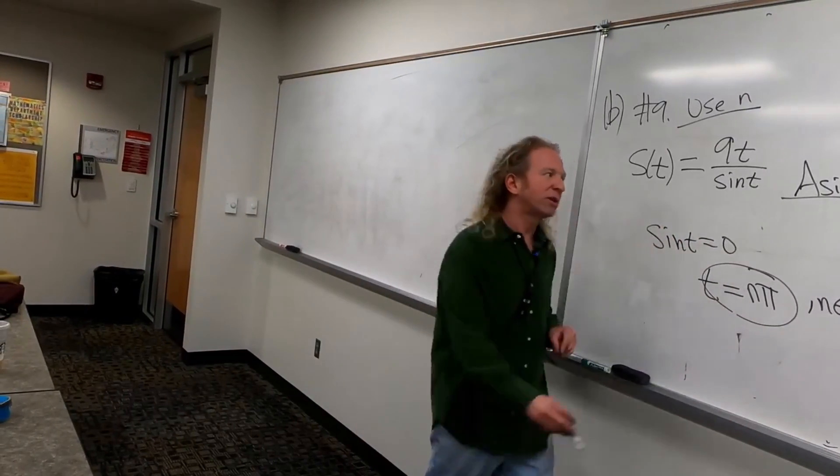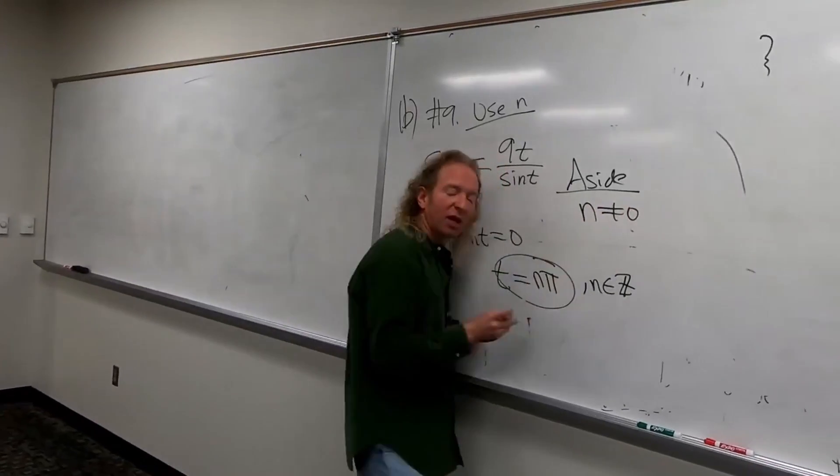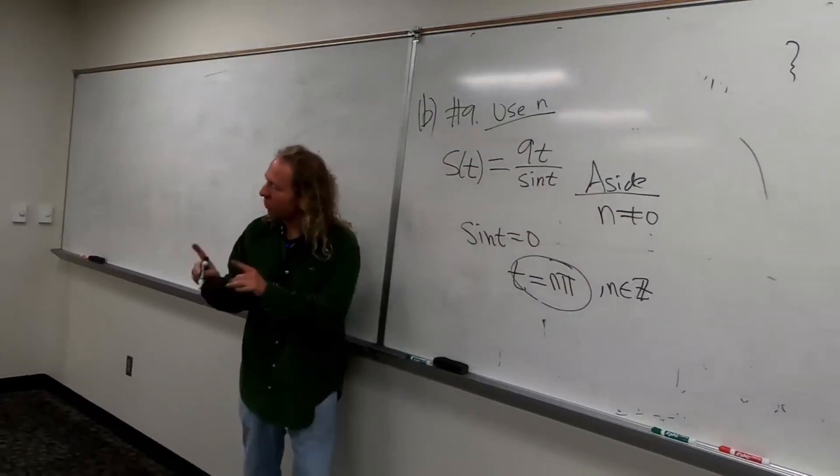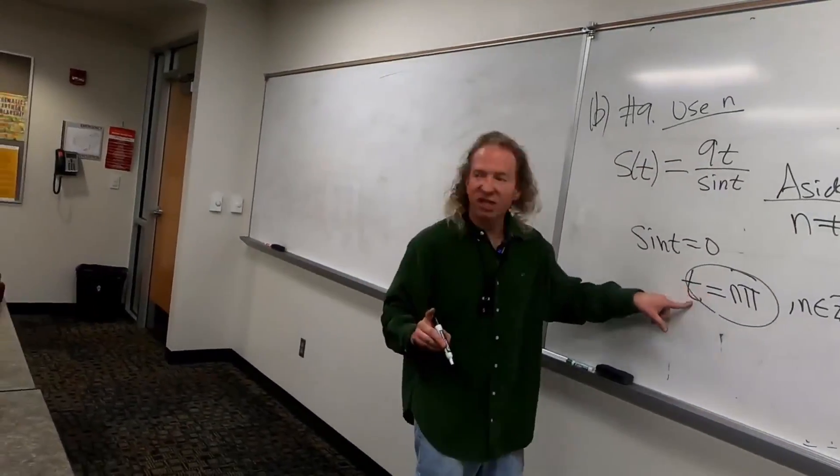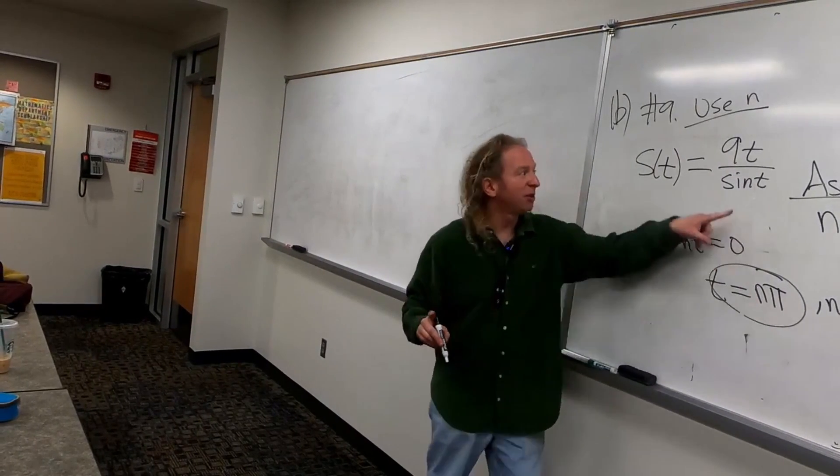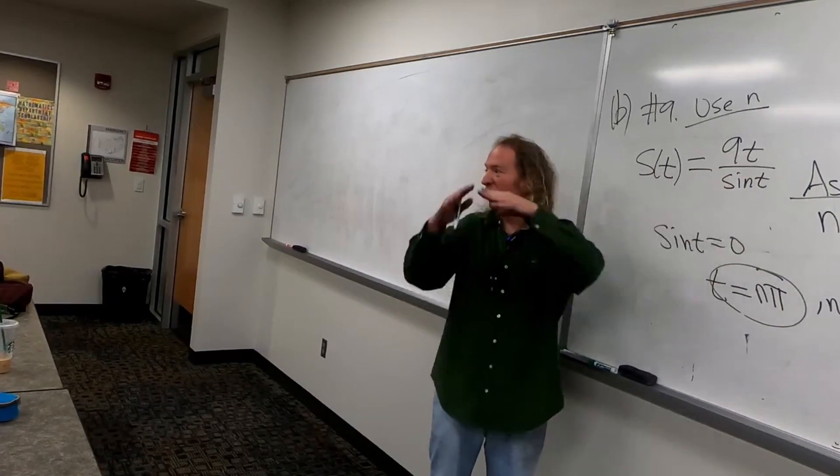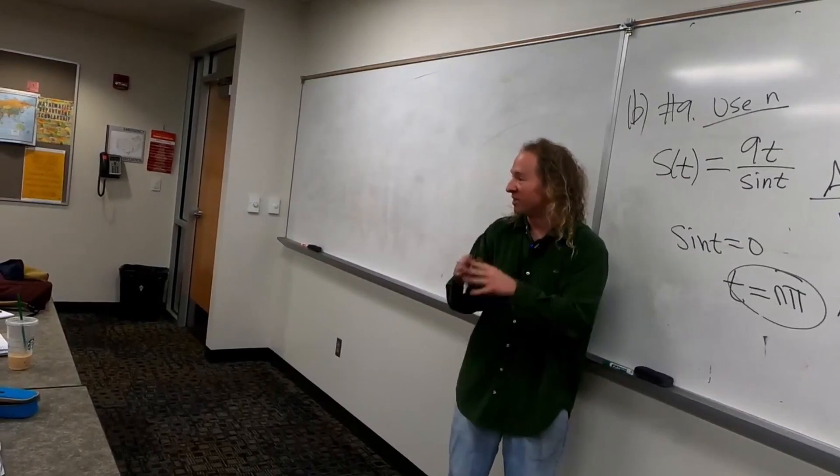The homework says you're supposed to do this for the homework. Here's why. If N is equal to zero, T is also going to be equal to zero. Right? And then you'll get zero over zero, and you're going to get a hole. Okay? So it's not a VA.